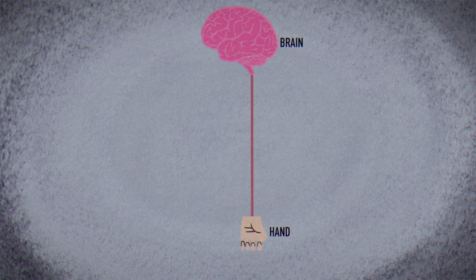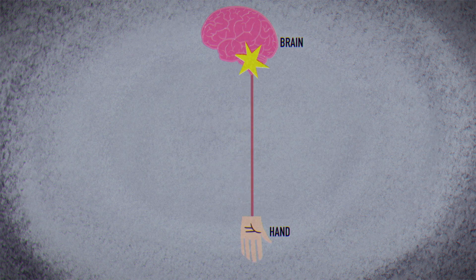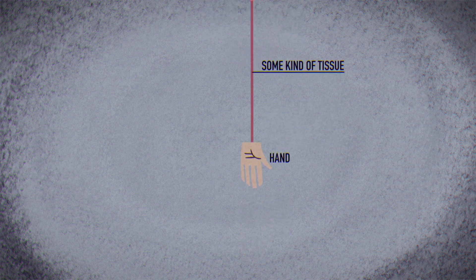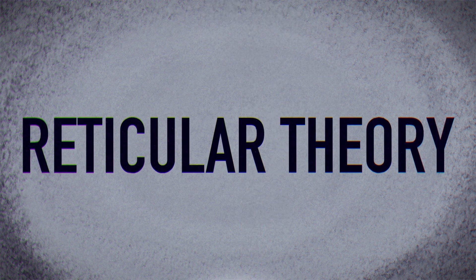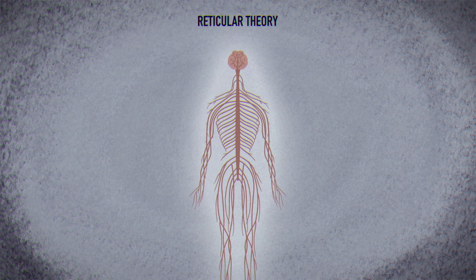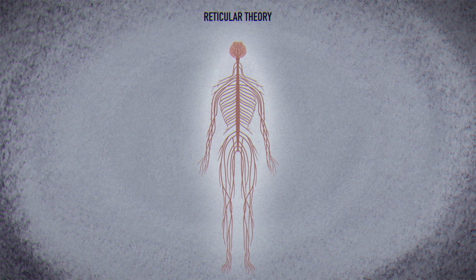It seemed that perfectly transmitting these impulses would require them to travel uninterrupted along some kind of tissue. This idea, called reticular theory, imagined the nervous system as a massive web of tissue that physically connected every nerve cell in the body.